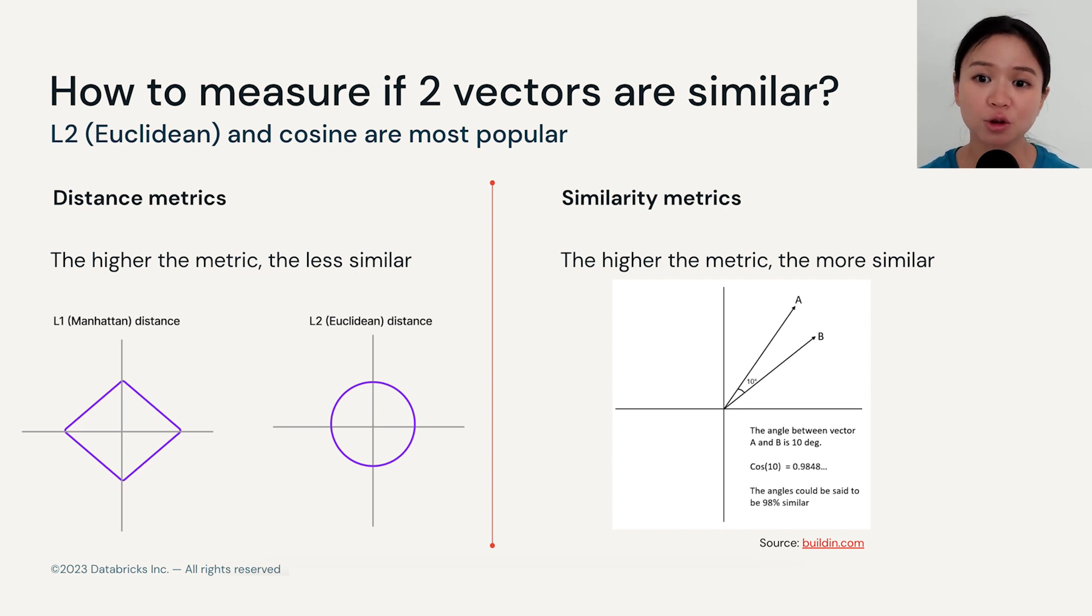On the flip side, we can also measure similarity between vectors by using cosine similarity measure. When you have a higher similarity metric, it means that you have more similar vectors.